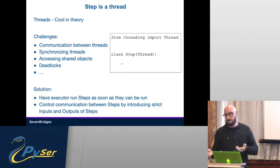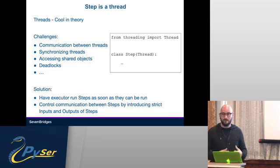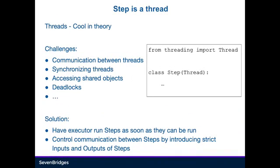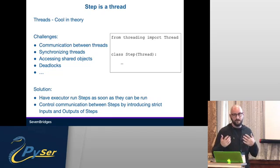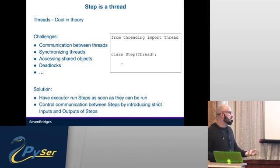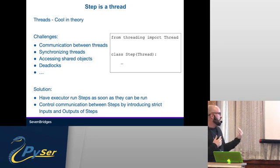That means each step and every node has to be executed separately — it has to be a thread in itself. The challenge was that communication becomes much more complex, because you have to figure out synchronization, accessing attributes, locking, and everything. Deadlocks were a big issue. But it solves things: if you run steps from an executor, as soon as the inputs for a step are ready, you get eager execution. So we decided to use the communication between steps through inputs and outputs as descriptors and see where it takes us.